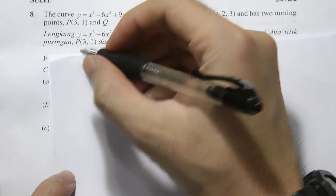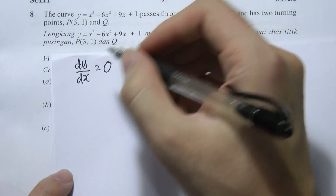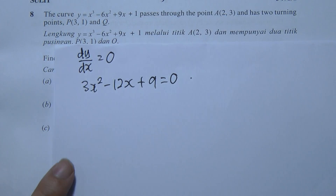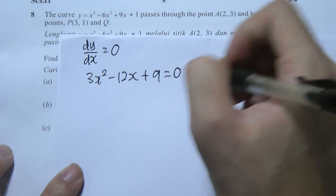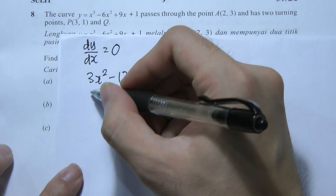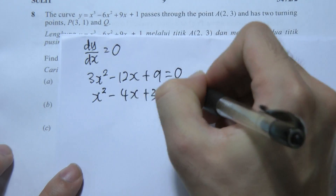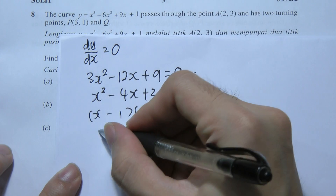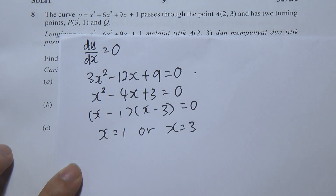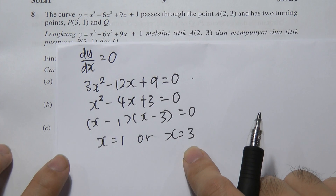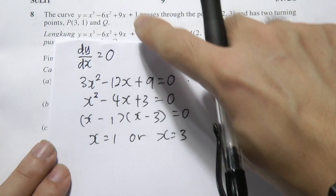At turning points, dy/dx = 0, so 3x² - 12x + 9 = 0. Dividing by 3: x² - 4x + 3 = 0. Factorising: (x - 1)(x - 3) = 0, giving x = 1 or x = 3. Since P is at (3,1) using x = 3, we exclude x = 3 and use x = 1 for point Q.